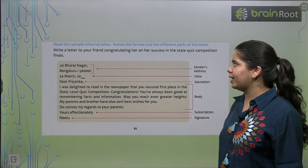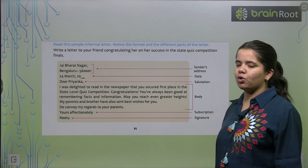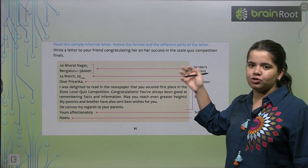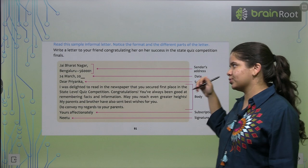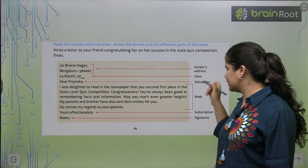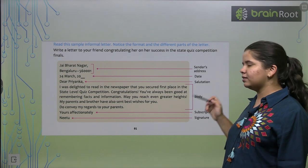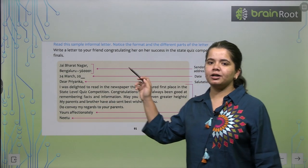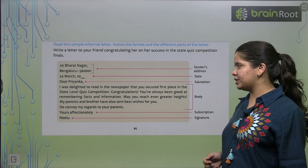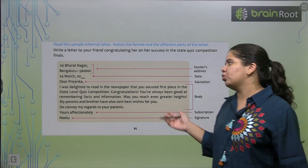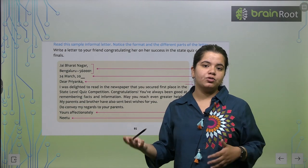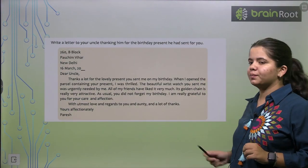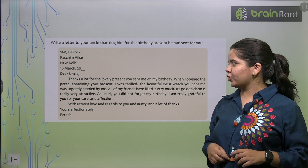Read this sample informal letter: 'Write a letter to your friend congratulating her on her success in the state quiz competition.' You write your own address first — the sender's address — then the date, then 'Dear [friend's name]' as the salutation. In the body, express how happy you were seeing her name in the newspaper, congratulate her, say how proud you are, encourage her to keep working hard, and convey your regards to her parents.